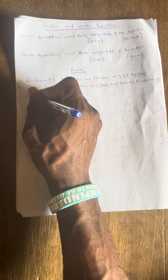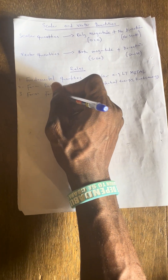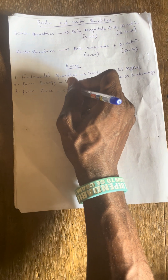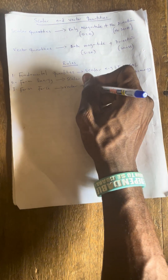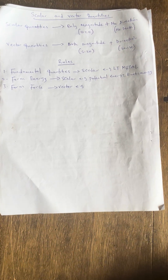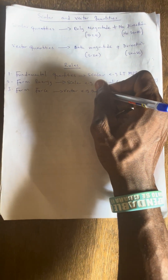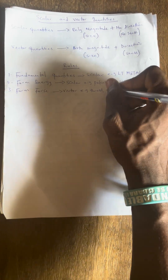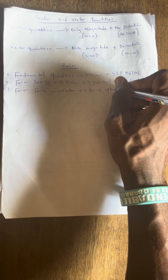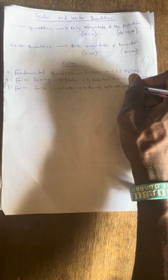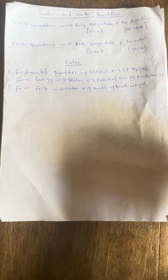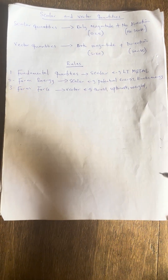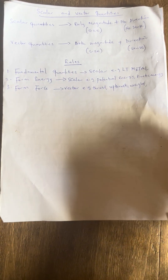Rule number three: any form of force is vector. You can have thrust — thrust is a force. You can have upthrust, which is also a force. We can have frictional force and normal force. Any form of force is vector.